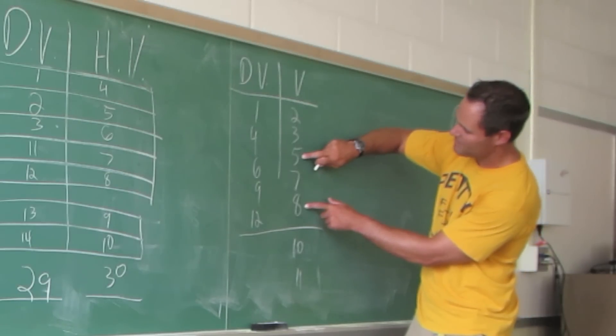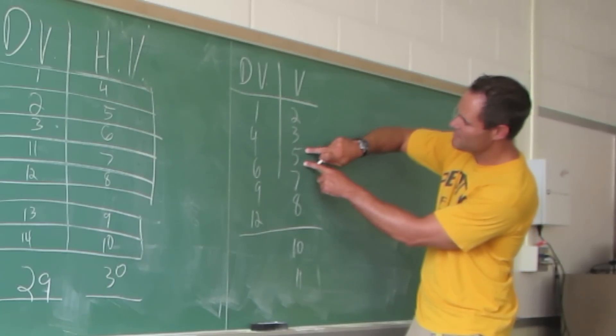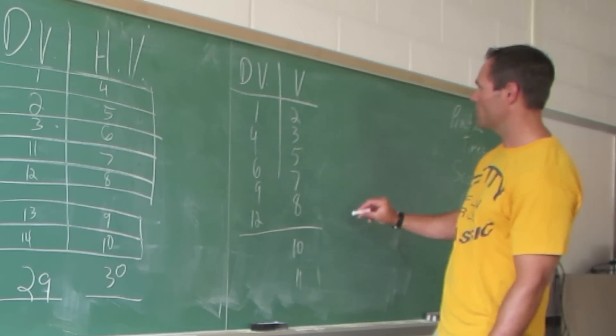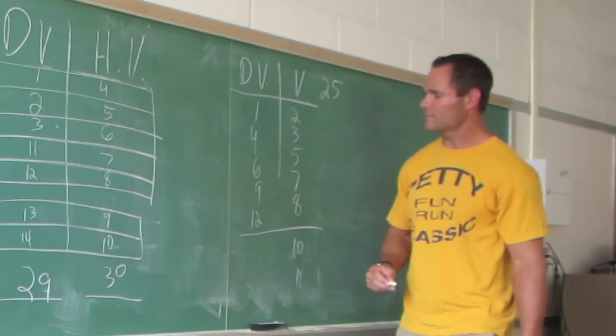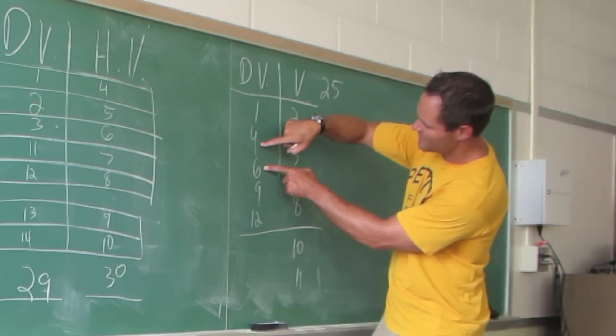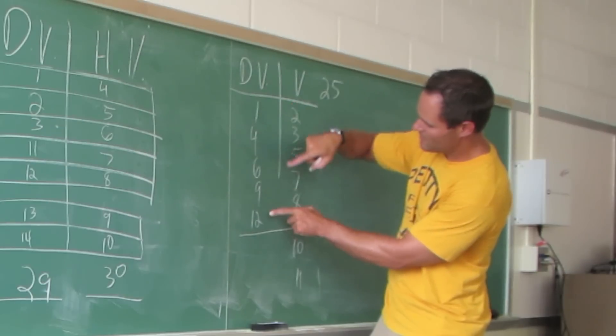We have 15, 20, 25. So their score is 25. And DelVal has 10, 20, 32.